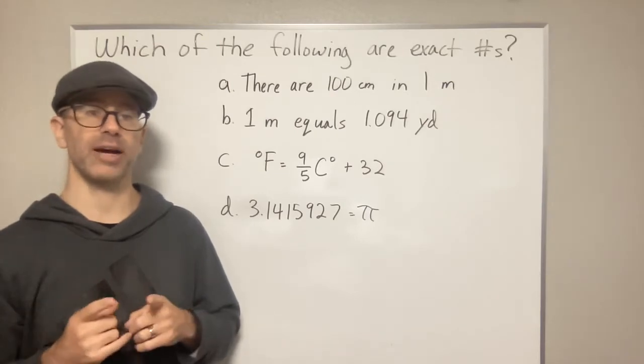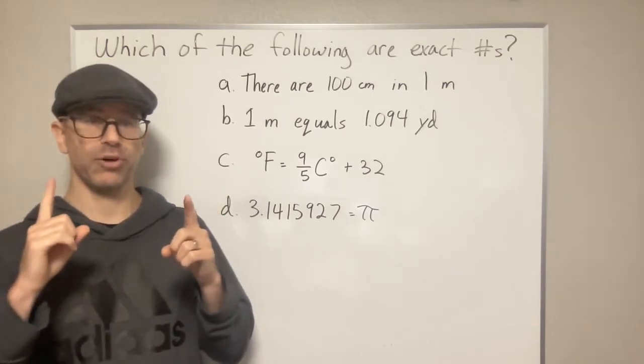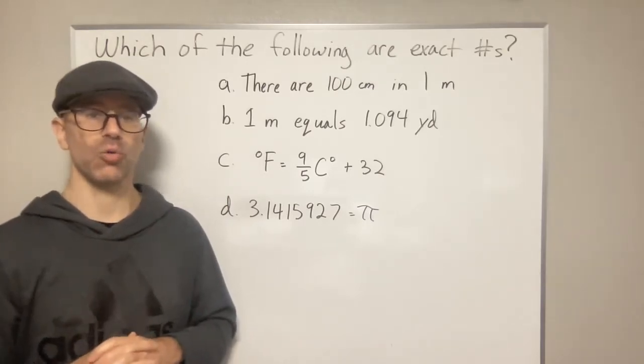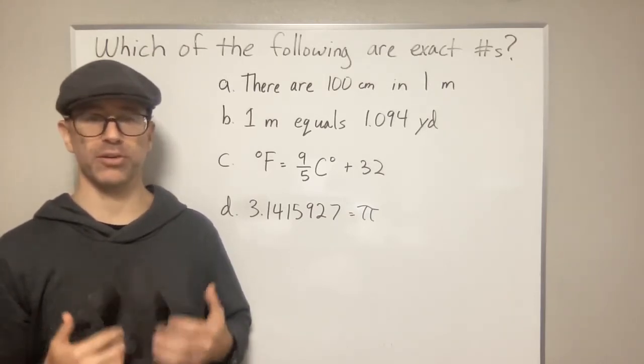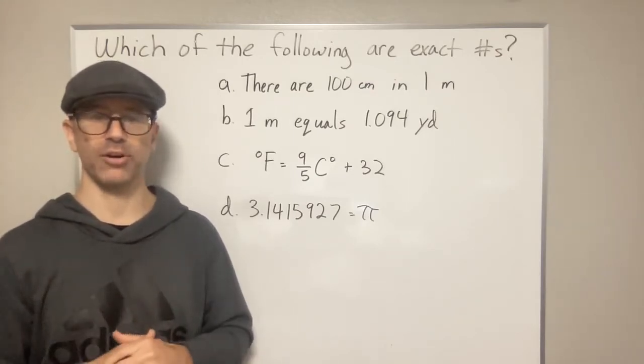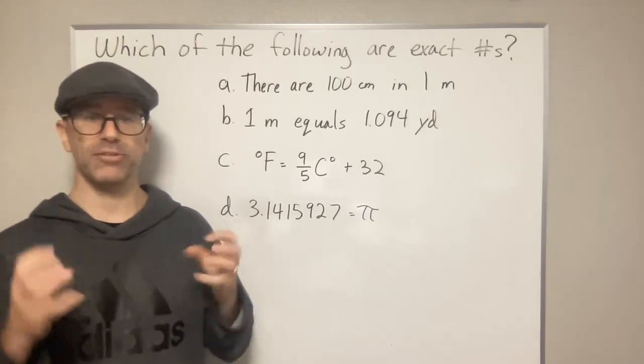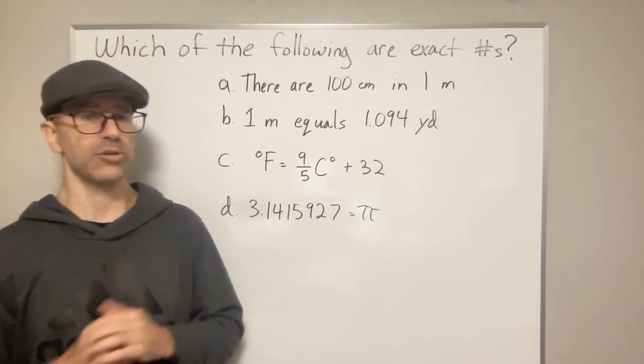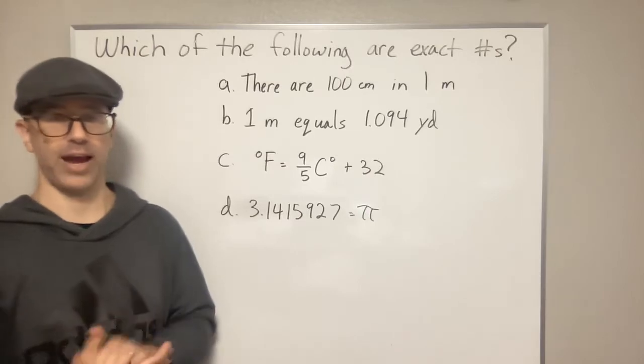So the only example that I've run across where you have an English unit related to a metric unit and that's an exact relationship is the inches to centimeters. So one inch is exactly equal to 2.54 centimeters because that is true by definition. We've defined it to be true. Like I said, I don't know of any other examples, but if you know, let me know. So that's the basic idea you want to get down in your head when you're looking at these things.